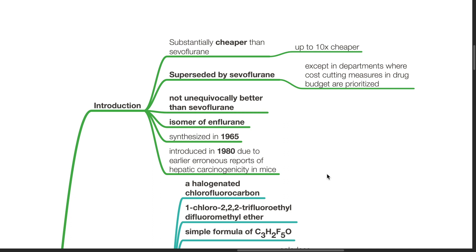Isoflurane is substantially cheaper than sevoflurane, up to 10 times cheaper. However, it is superseded by sevoflurane in most anesthetic machines, except in departments where cost-cutting measures in drug budgets are prioritized.